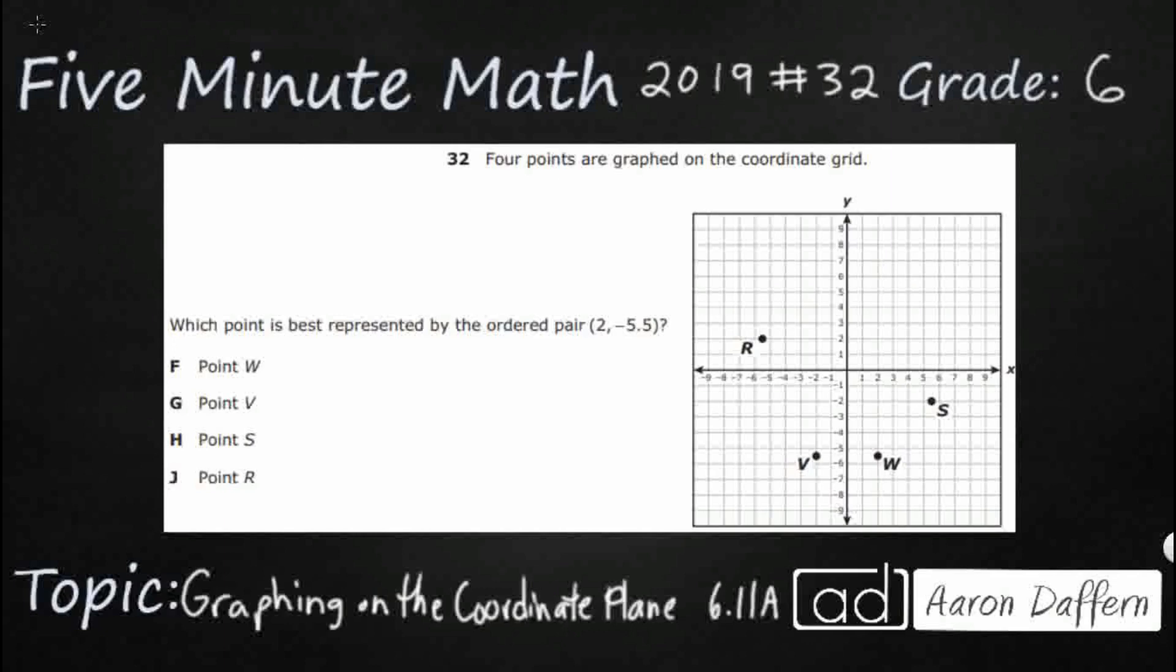We have four points on this coordinate grid and we simply need to find the point R, V, W, or S that is best represented by (2, -5.5). So let's take a look at our coordinates. We have four quadrants. Quadrant 1 has a positive x and a positive y.